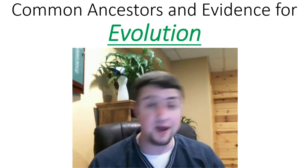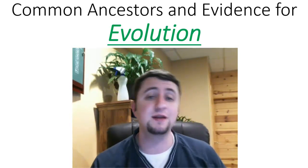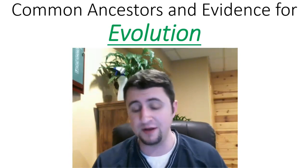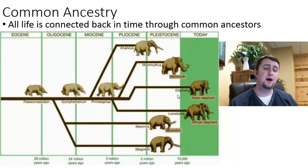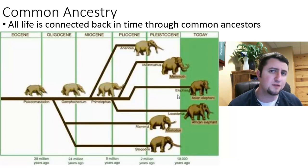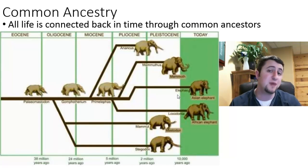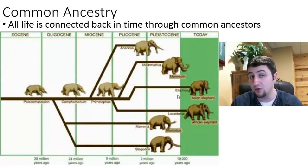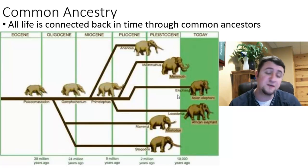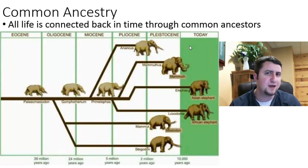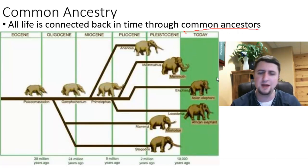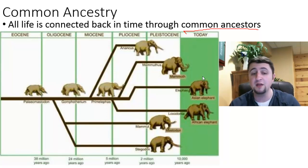Hey there guys, it's Mr. Herbst here and today my focus is going to be on common ancestors and evidence for evolution. The main concept of all of evolutionary biology is that all life is connected back in time through what we call common ancestors — kind of like a family tree that dates back to the first organism we find in fossils. To understand what a common ancestor is, I'm going to talk about the common ancestry of elephants.